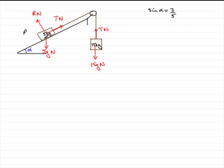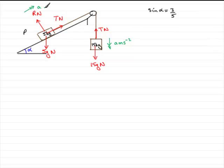We've got to mark on the accelerations of the particles. The 15 kilogram mass is going to accelerate downwards, so we'll have an acceleration arrow of a metres per second per second. As this moves down, P is going to move up the plane. What acceleration does P have? It'll have the same acceleration, because the string is inextensible — it doesn't stretch. So as soon as the 15kg mass moves, P will start to move up. That's why the accelerations are exactly the same.